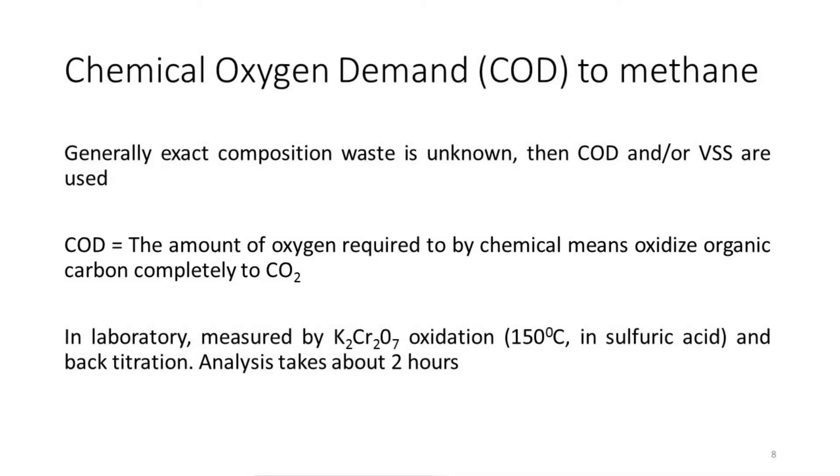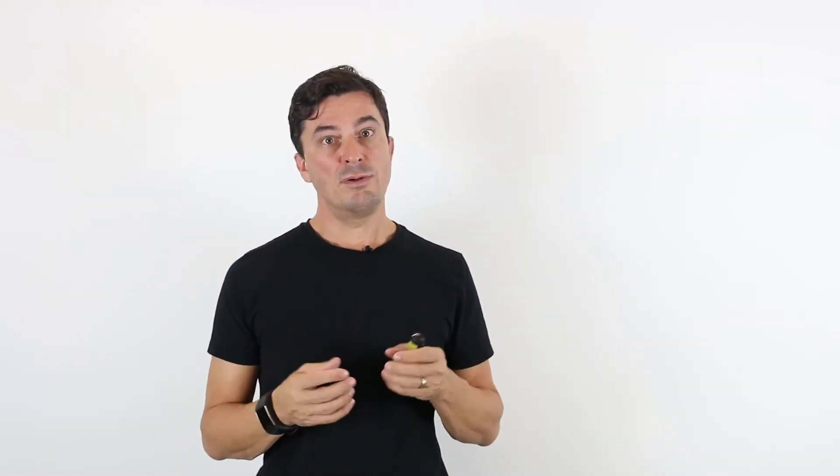It's a parameter that you can analyze reasonably easy in the lab by taking a sample oxidizing with dichromate under acidic conditions at about 150 degrees for about 2 hours. So let's look how COD, where you typically think of an aerobic process, relates to methane.